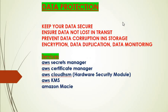The first category is data protection — keeping your data secure, ensuring data is not lost in transition, preventing data corruption in storage such as S3, encrypting data, data duplication for safety, and continuous data monitoring. Services in this category include AWS Secrets Manager, AWS Certificate Manager, AWS CloudHSM (hardware security module), AWS KMS, and Amazon Macie.